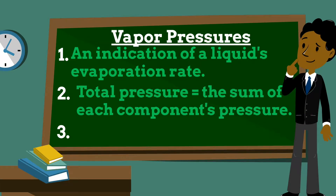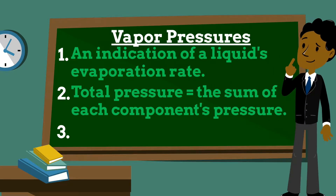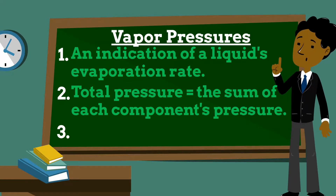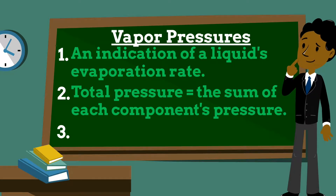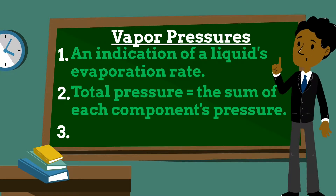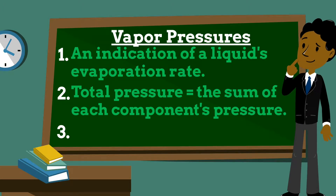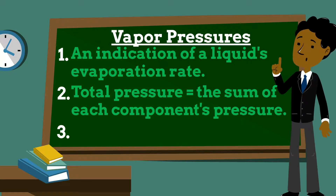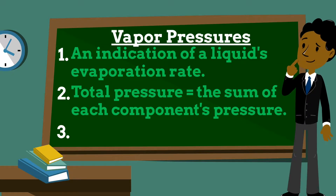The vapor pressure that a single component in a mixture contributes to the total pressure in the system is called partial pressure. In a mixture of gases, each gas has a partial pressure, which is the hypothetical pressure of that gas if it alone occupied the entire volume of the original mixture at the same temperature. The total pressure of an ideal gas mixture is the sum of the partial pressures of the gases in the mixture.